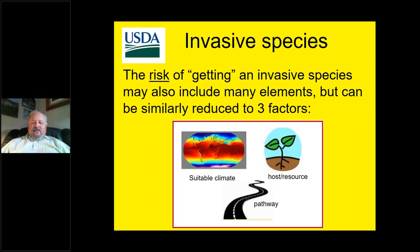With invasive species, the risk of getting an invasive species may also include many elements, but it can be similarly reduced to three factors. The emphasis here is on the risk of getting an invasive species. Similarly: suitable climate, some sort of a host or other resource, and then very importantly, a pathway.